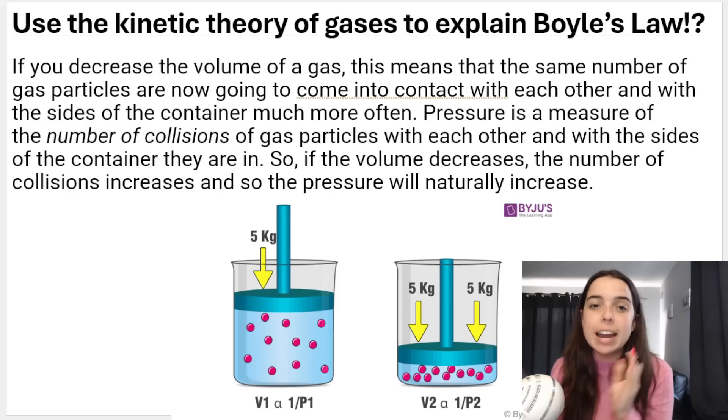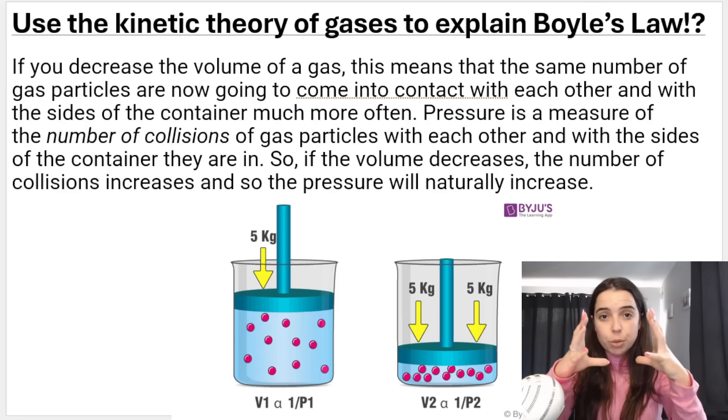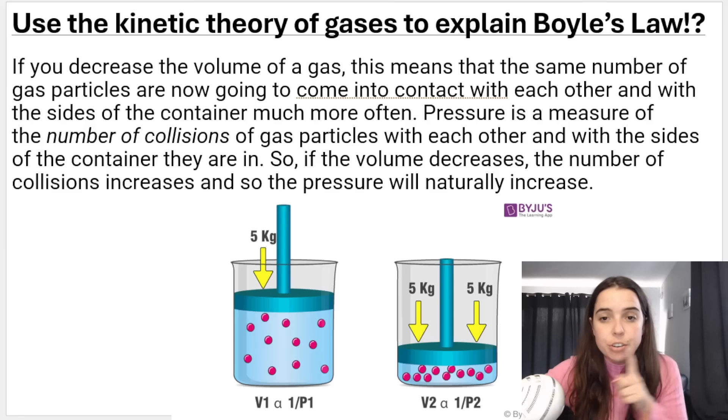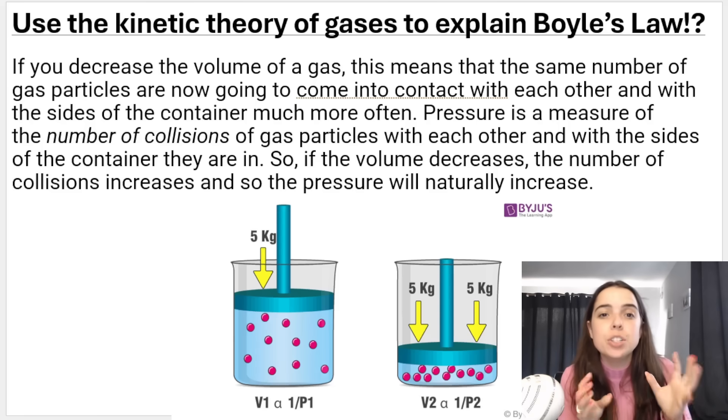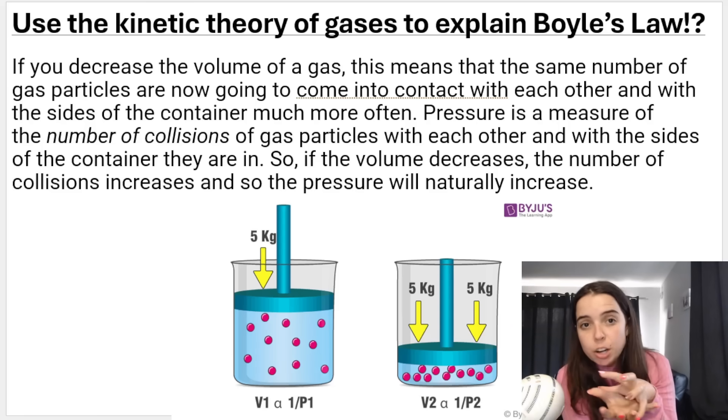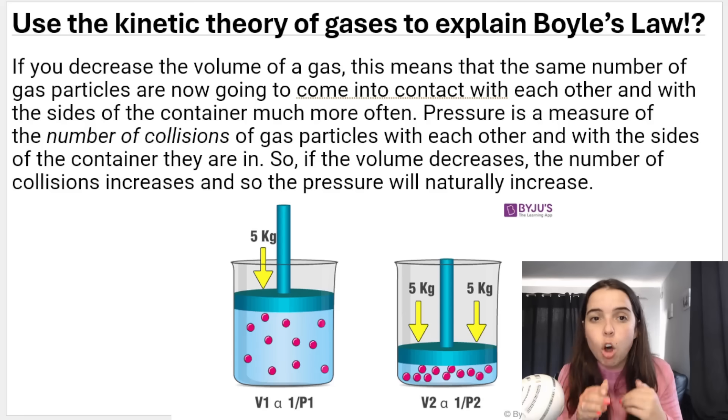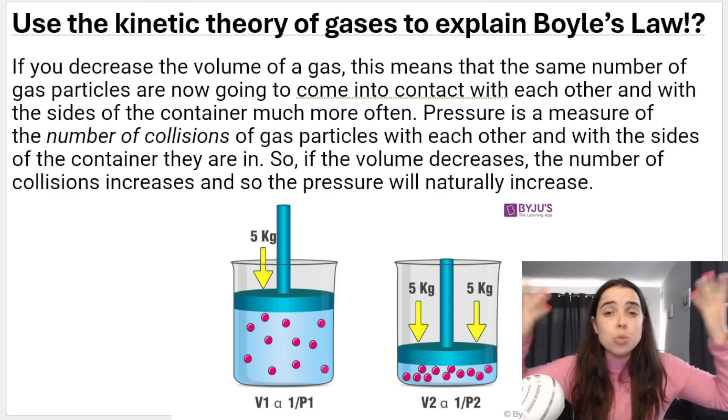You need to be able to use the kinetic theory of gases to explain Boyle's law. If I decrease the volume, there will be the same number of particles. If you look at this picture there are 11 particles in both pictures. Because you're decreasing the volume they will come into contact with each other and the walls of the container more frequently. The number of collisions of gas particles will increase, and that directly relates to pressure. Remember that pressure is a measure of the number of collisions that the gas particles have with the container walls. So if we decrease volume, pressure will increase, and the opposite is also true.